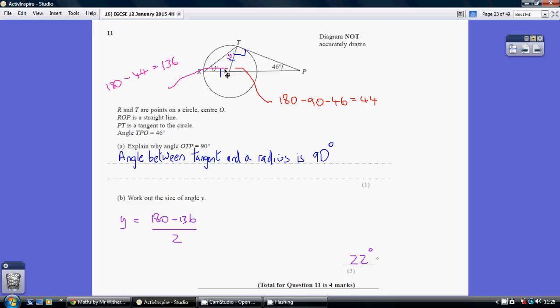Now, the next thing to notice is that triangle ROT is an isosceles triangle. RO and OT are both radiuses of the circle, so they are both the same length. So that length RO is the same as that length OT.